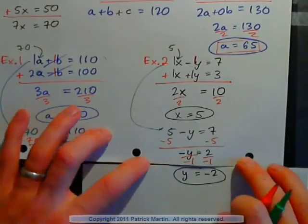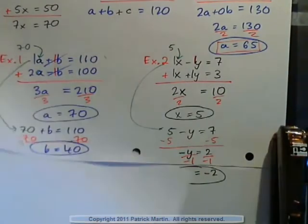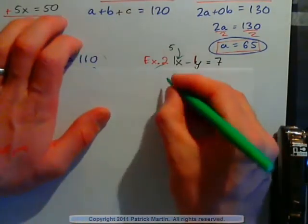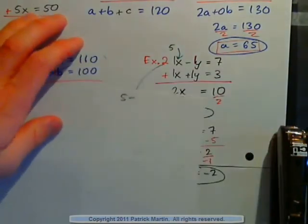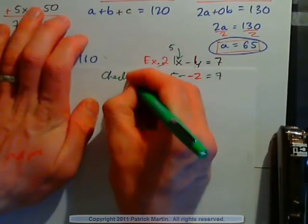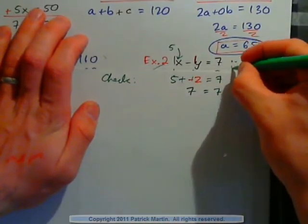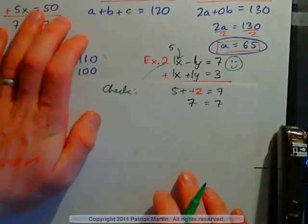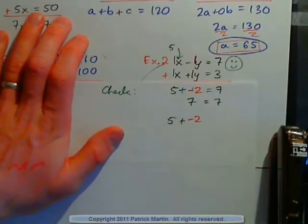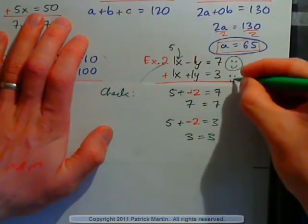Now I can check both answers. The first equation was x minus y equals 7. x is 5 and y is negative 2, so 5 minus negative 2 should equal 7. Negative negative makes positive, so I have 7 equals 7. The first equation works out. The second equation is x plus y equals 3: 5 plus negative 2 should equal 3. It is 3 — we end up with 3 equals 3. Both equations check out nicely.